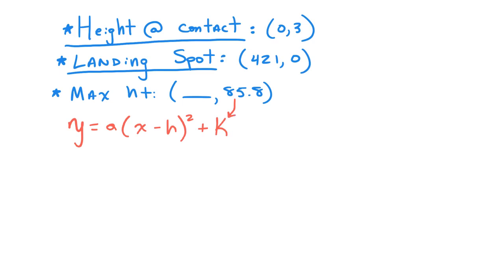These are the three pieces of information we know right now. I'm going to be writing the generic vertex form of a quadratic. The height of contact is given, we're all going to be using that 0, 3. Already, we already know the maximum height is 85.8. We don't know that x value, but that basically gives us the k value of our vertex form.